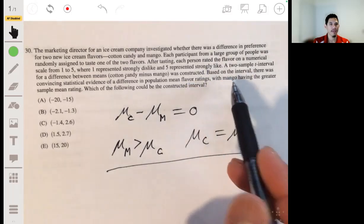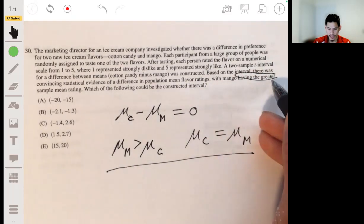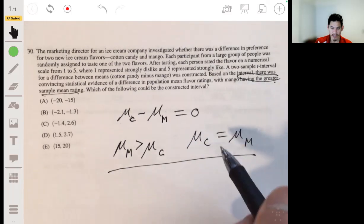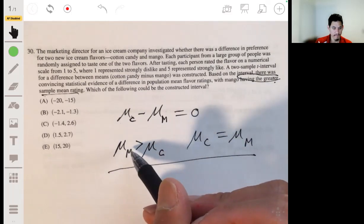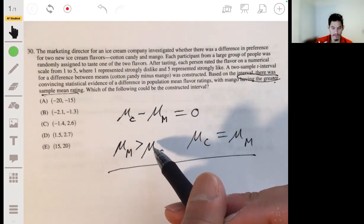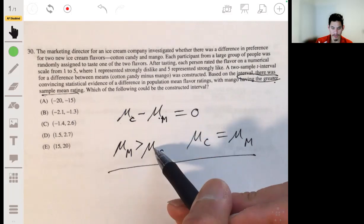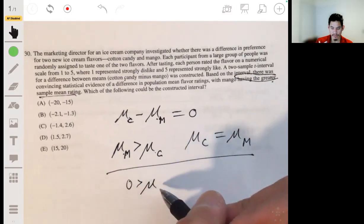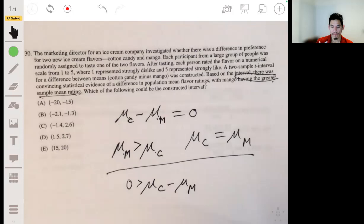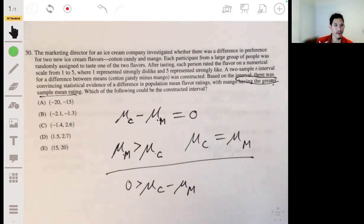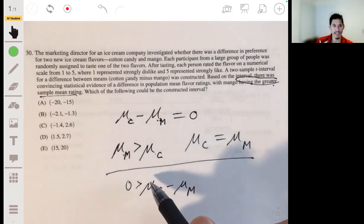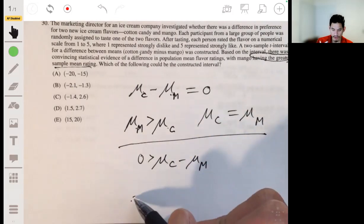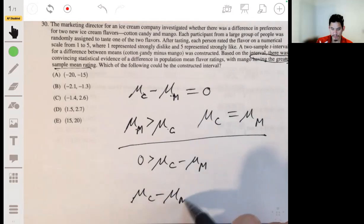We're saying that the mean of mango has a greater sample mean rating, then this is basically saying that if we subtracted the mean of mango from each side, you would have zero is greater than mu sub c minus mu sub m. So what does that mean? This is a negative number. Another way of looking at this is mu sub c minus mu sub m is less than zero.